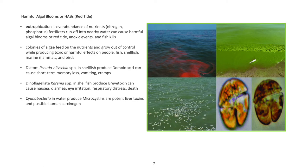Diatom: Pseudonitzschia spp. in shellfish produce domoic acid, which can cause short-term memory loss, vomiting, and cramps. Dinoflagellate: Cyanobacteria spp. in shellfish produce brevetoxin, which can cause nausea, diarrhea, eye irritation, respiratory distress, and death. Cyanobacteria in water produce microcystins, which are potent liver toxins and possible human carcinogens.